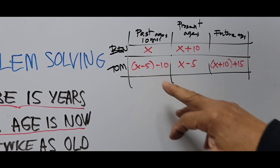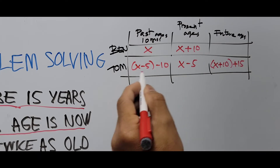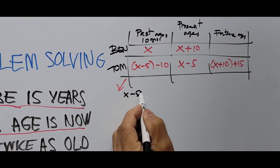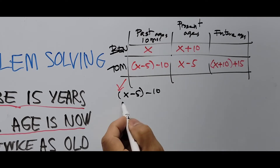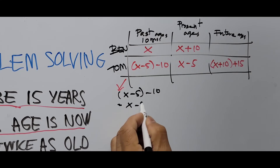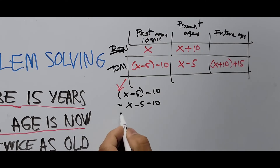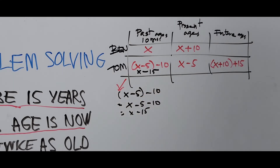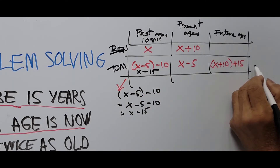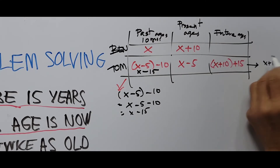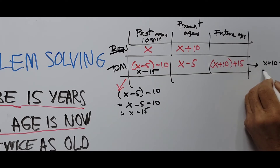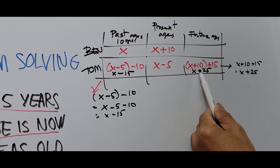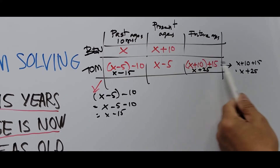Simplifying Tom's past age: x minus 5 minus 10 equals x minus 15. And simplifying Tom's future age: x plus 10 plus 15 equals x plus 25. So Tom's past age is x minus 15, and Tom's future age is x plus 25.